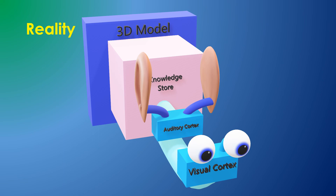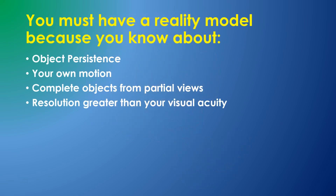Here are some reasons you know such a model exists in your brain. You can close your eyes and know that objects in your vicinity are still there. When you move through your environment you know that most objects are not moving — it is you that is moving relative to the objects. You know about complete objects even though you can only see a portion of each. You sense reality at a much higher overall resolution than your retina can sense.